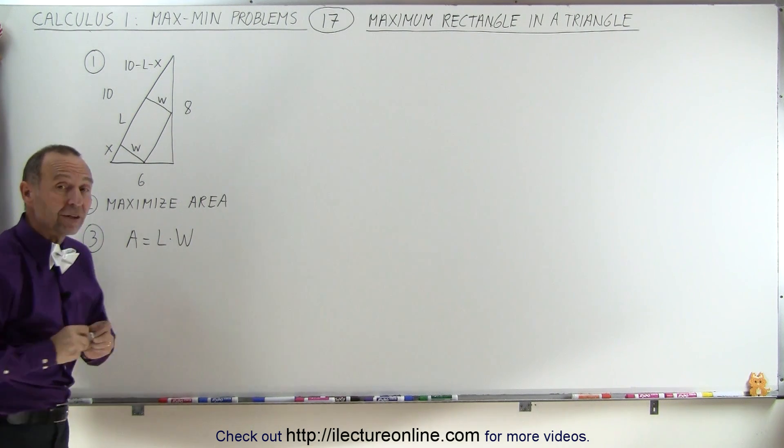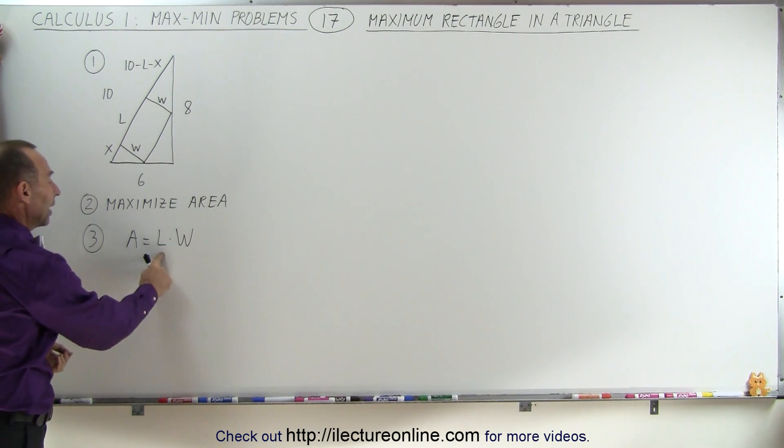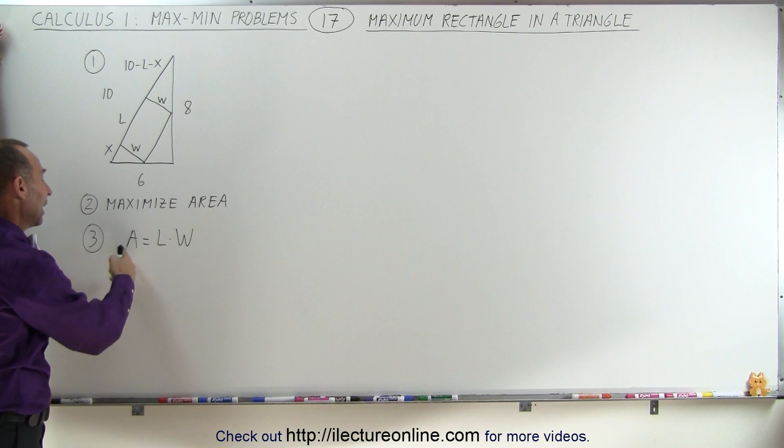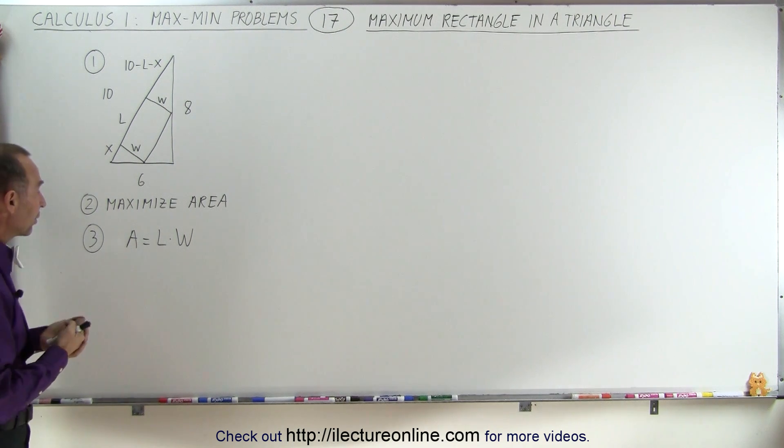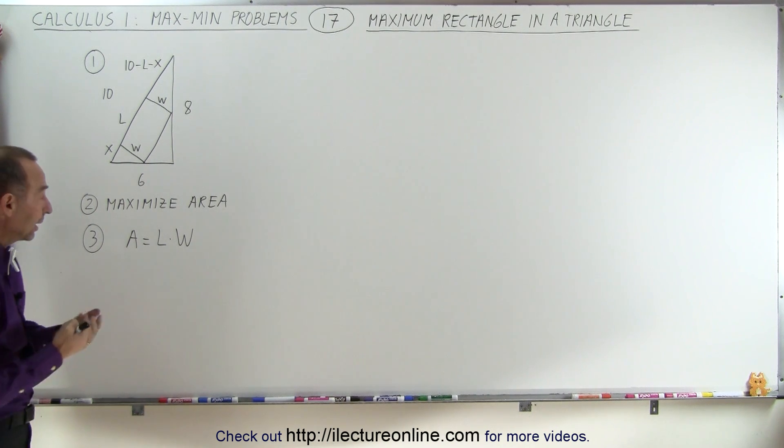So it starts out fairly simple here, but you realize right away that you have two unknown variables, L and W, the length and the width, and you're trying to find the maximum area, which means you need to find some constraints that relate L to W, that relate the length to the width of that particular rectangle.